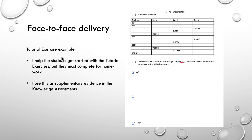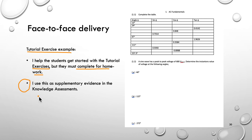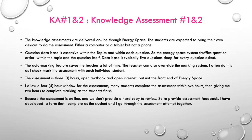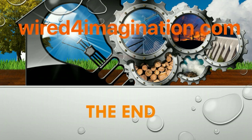Again, in our face-to-face delivery, there is the tutorial exercise book. I help the students get started with the tutorial exercise — as time allows in each lesson — but they're required to do and complete it for homework, and again it's used for supplementary evidence as they go through the unit. That's it for now. Thank you for watching, and I hope you got something out of this segment on competency-based assessment in AC with Dr. Ken. All the best. Bye.